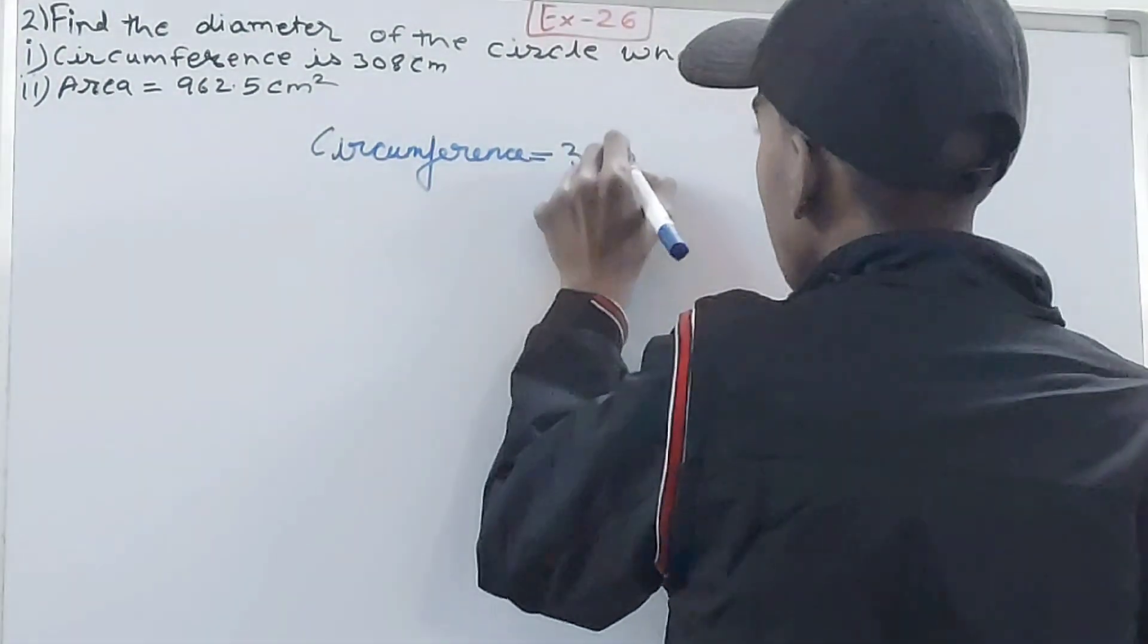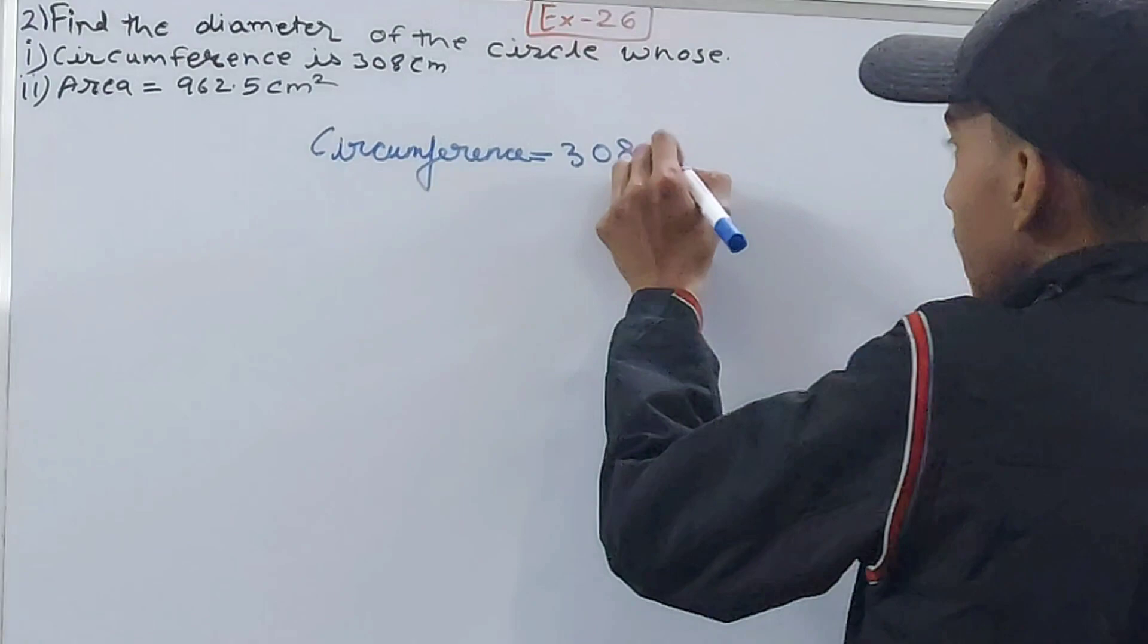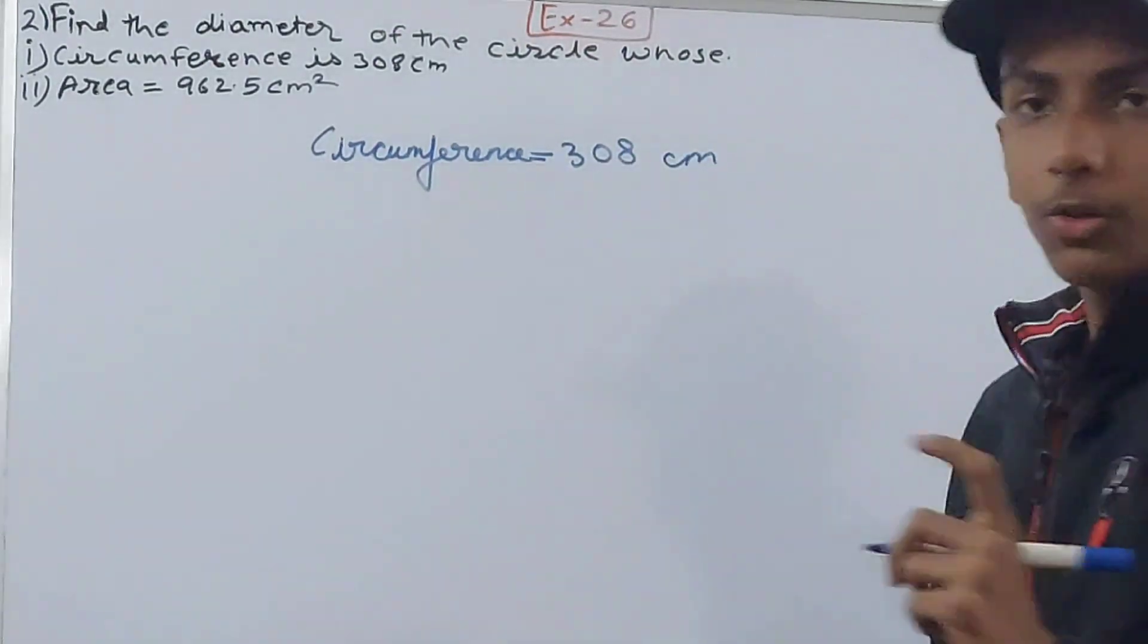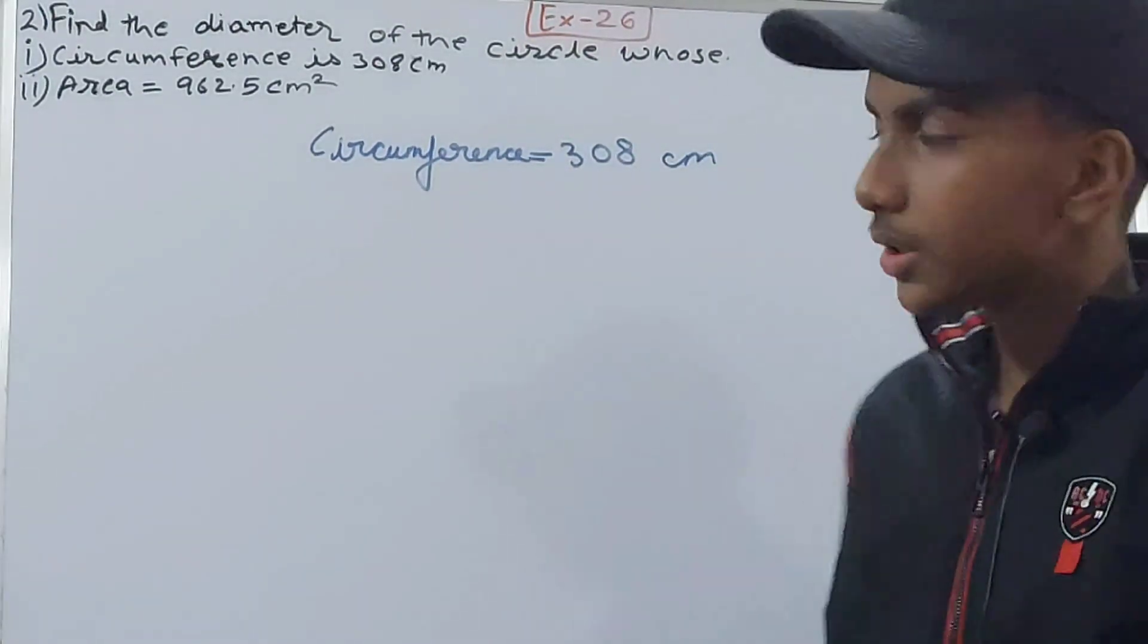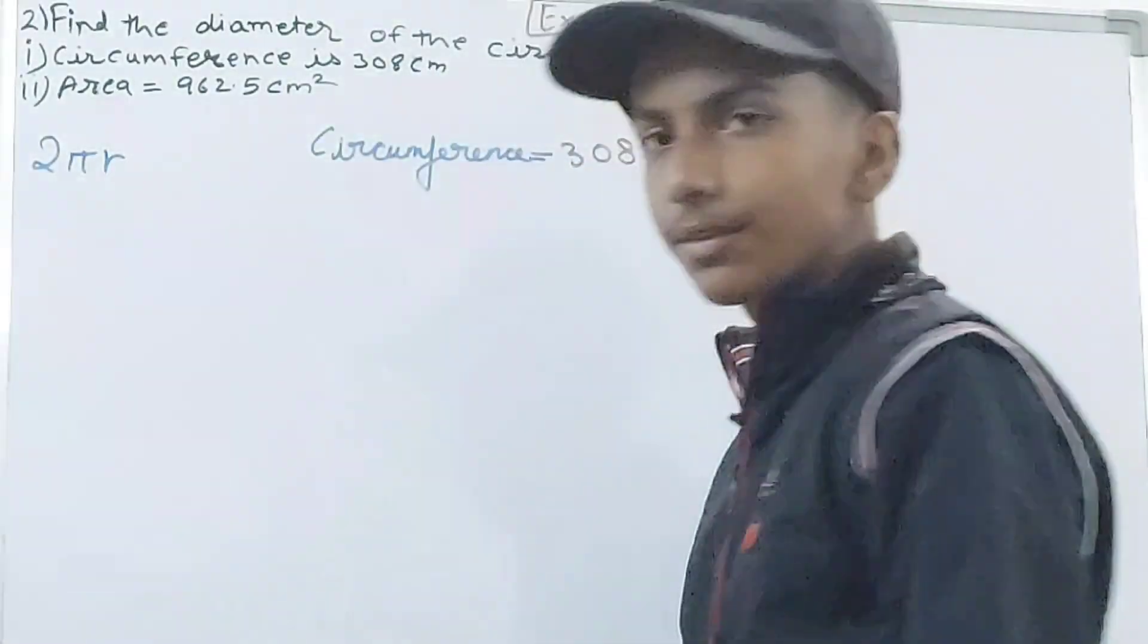So circumference equals 308 centimeters. We know the formula of the circumference of a circle. There are two formulas. One is 2πr, which you can use when you have the radius.